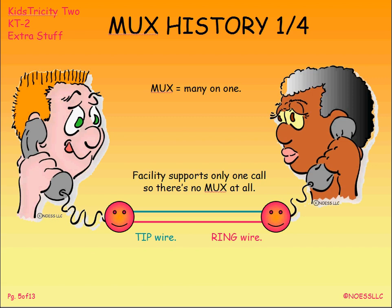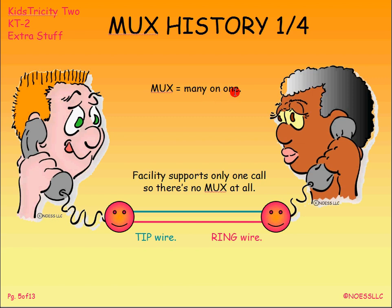Let's look at a little history of muxes. This is the simplest circuit — it's a two-wire circuit. I've got a tip wire, the green one, and a ring wire, the red one, and a phone. There's no mux here because I've got a single call on a single facility: a tip and ring twisted pair. A mux is just a method of putting many things onto one thing. I've only got one call on one path, so there ain't no mux at all.